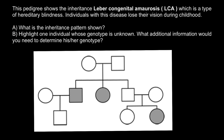Question A: what is the inheritance pattern shown? And question B: highlight one individual whose genotype is unknown — what additional information would you need to determine his or her genotype?